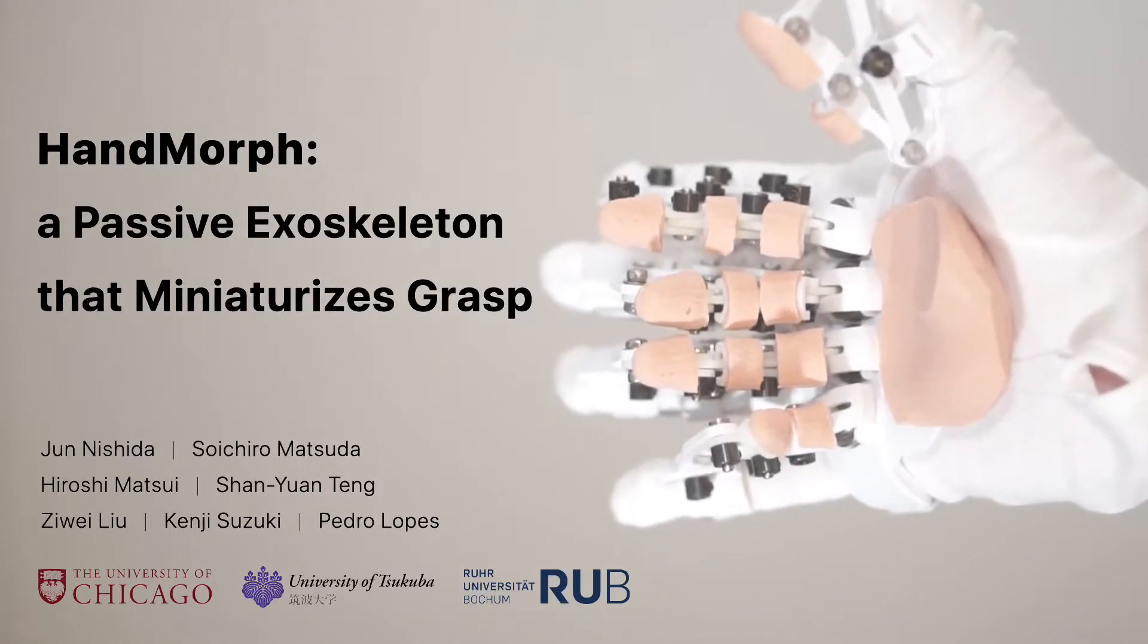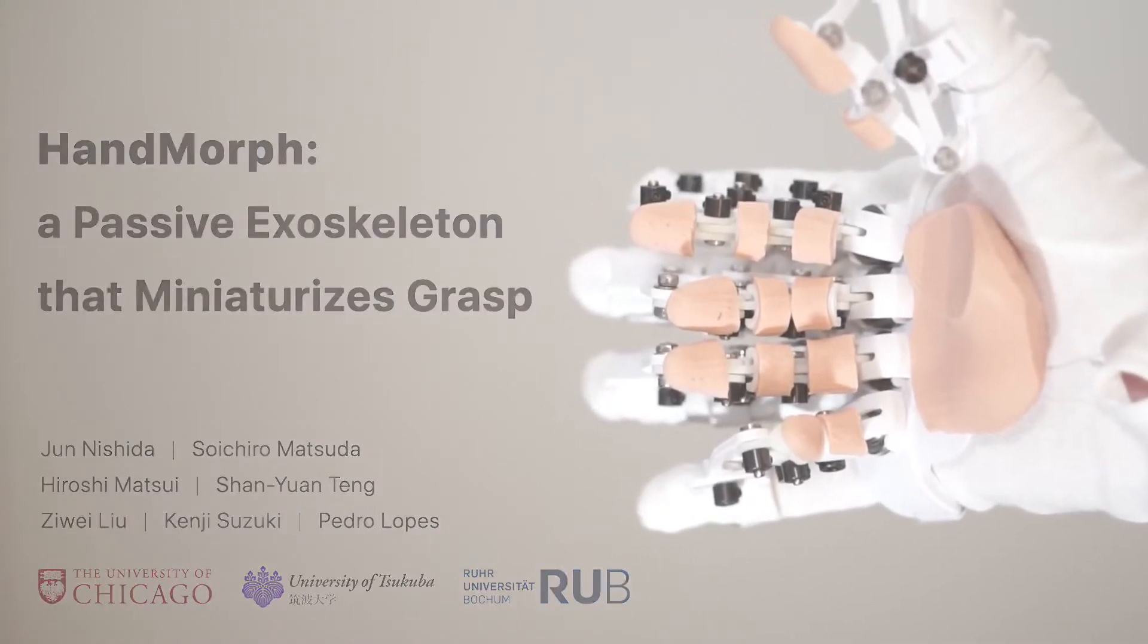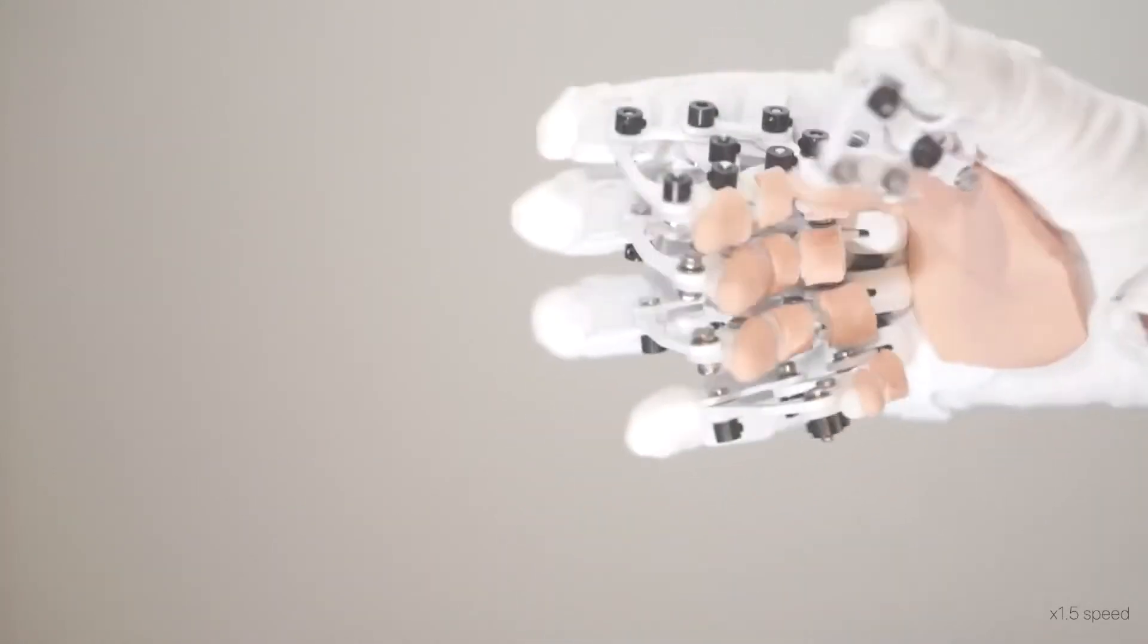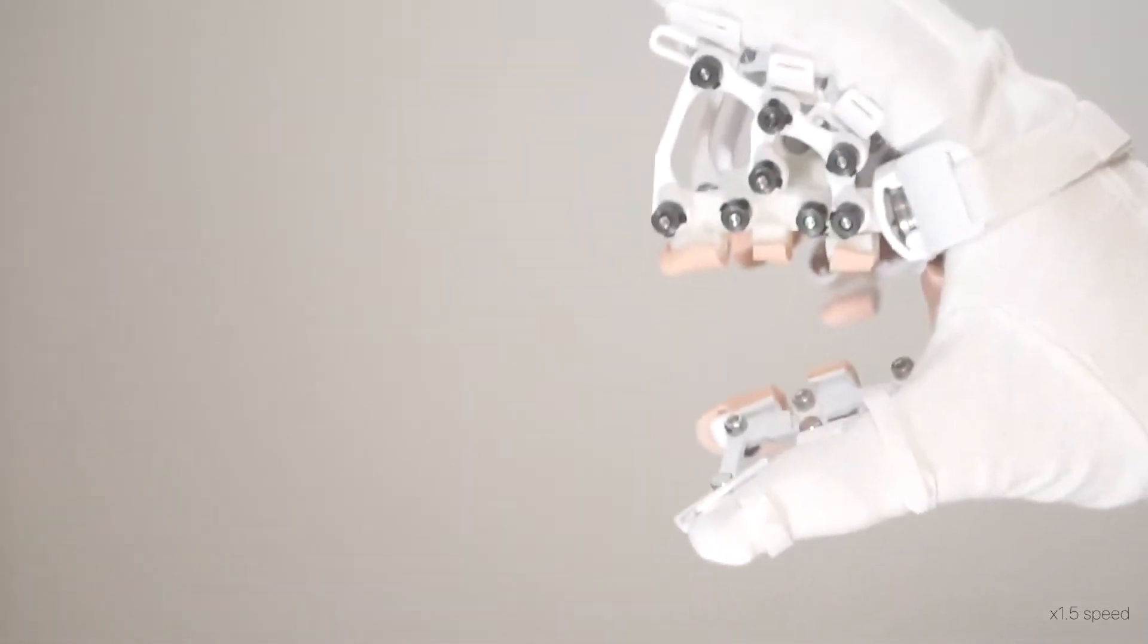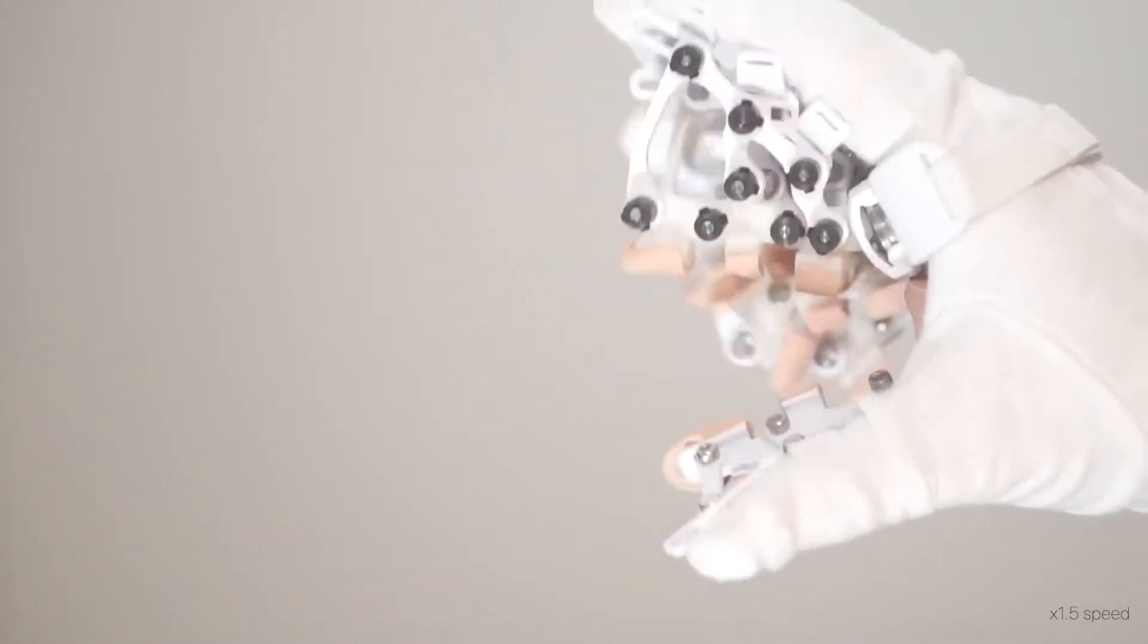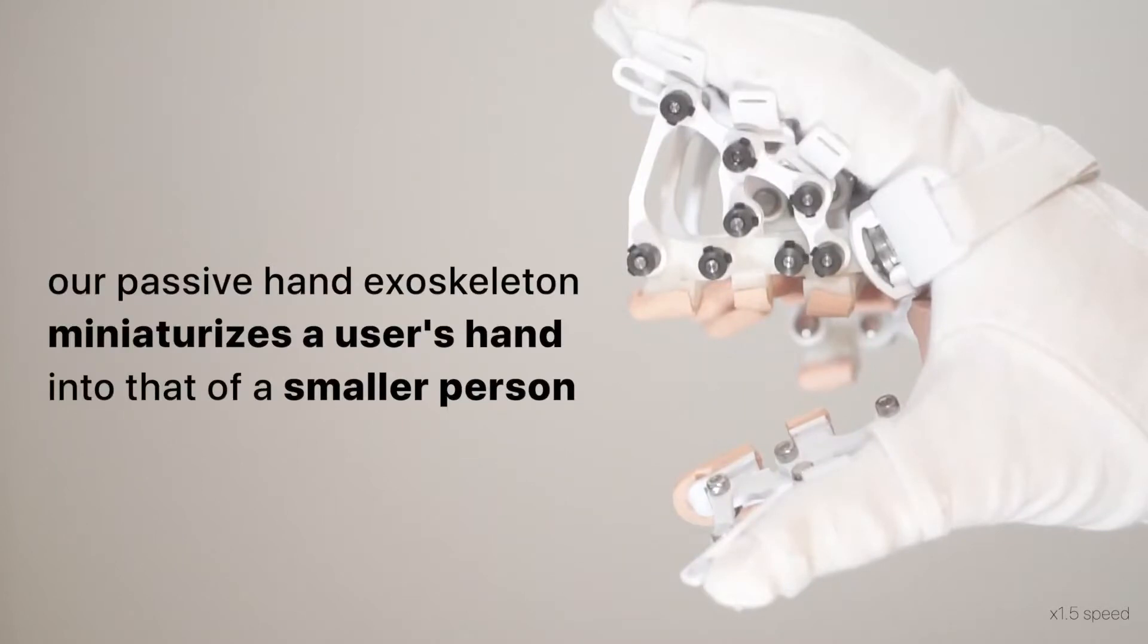Hand Morph, a passive exoskeleton that miniaturizes grasp. Our passive hand exoskeleton miniaturizes a user's hand into that of a smaller person.